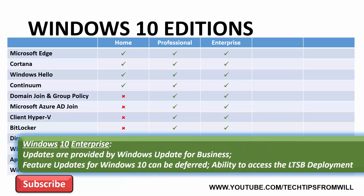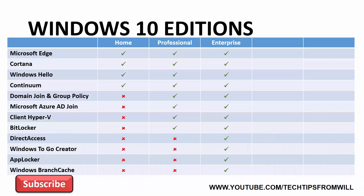With regards to updates, Windows 10 Enterprise operates in a similar manner to Windows 10 Professional. Windows 10 Enterprise also receives updates using Windows Update for Business, giving the user no control over security updates, but still allowing you to defer feature updates. In addition, Windows 10 Enterprise customers also have the ability to access a special deployment of Windows 10 known as Windows 10 Enterprise Long-Term Servicing Branch, or simply LTSB.